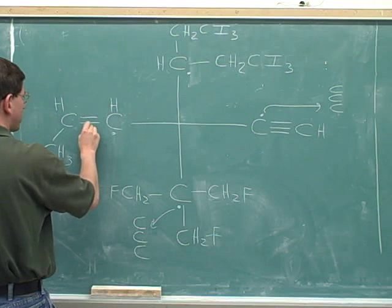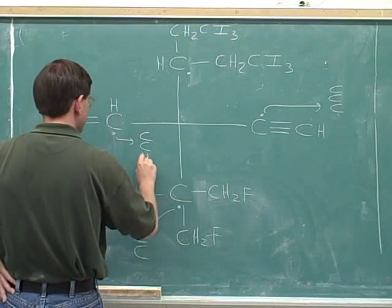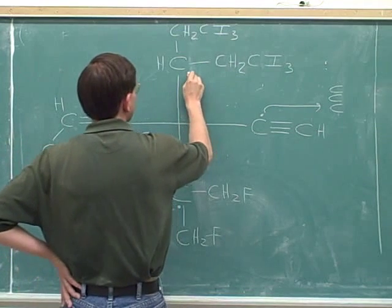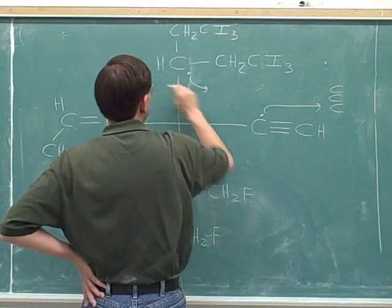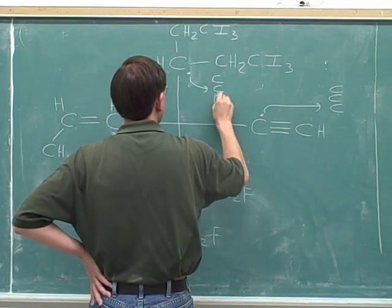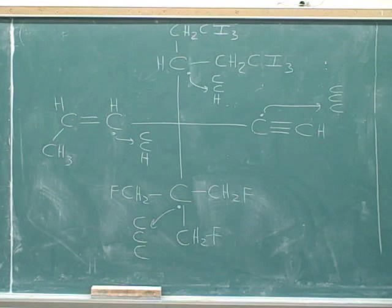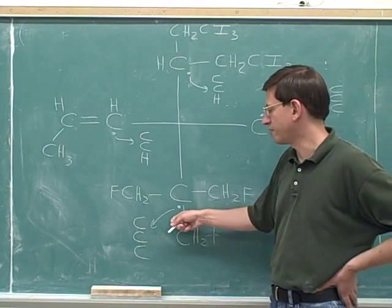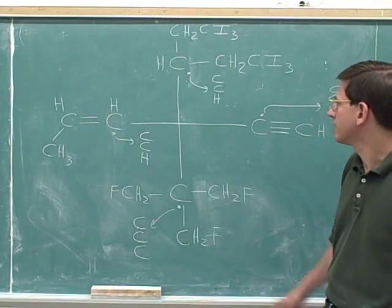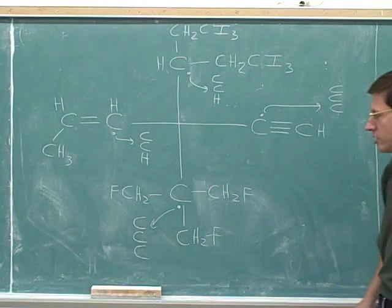This carbon is double bonded to a carbon and a hydrogen. The double bond counts as two carbons. And this carbon up top is bonded to a carbon, a carbon, and a hydrogen. Now we've got two ties: the group on the right is tied with the group on the bottom — they have three carbons each. And the group on the top is tied with the group on the left — they have two carbons and a hydrogen each.